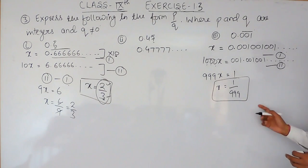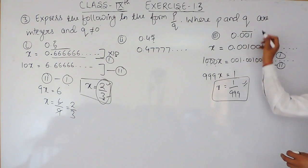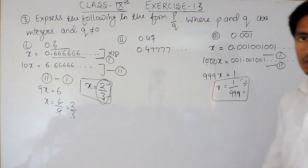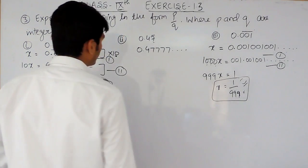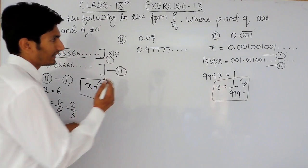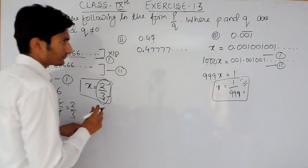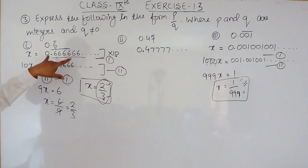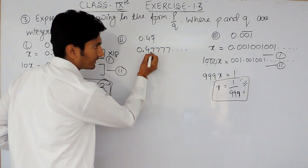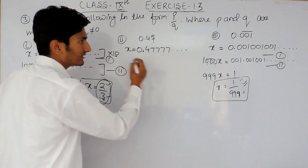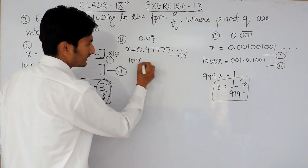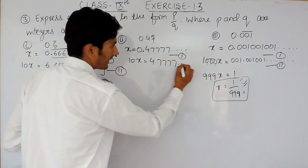So the answer for this third part is 1 upon 999, expressed in the form P upon Q where P and Q are integers and Q is not equal to 0. Now for 0.47 bar — here 4 is non-repeating and 7 is repeating — we first let x equal the expression. Multiplying by 10 gives 10x equals 4.777... and so on.